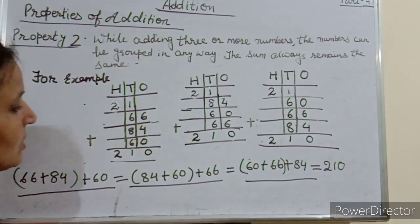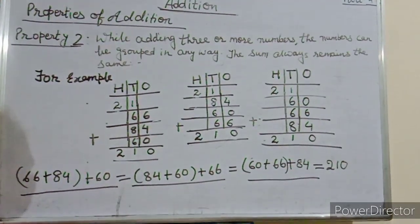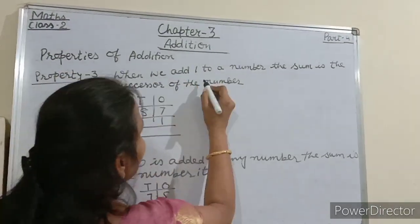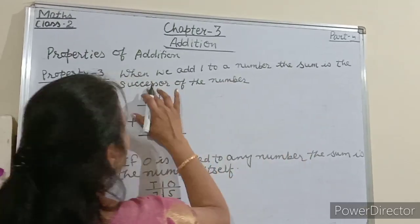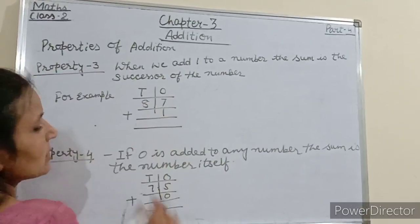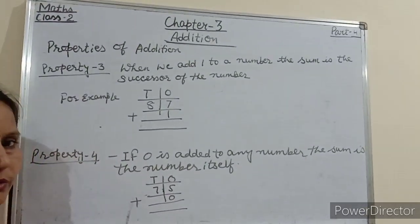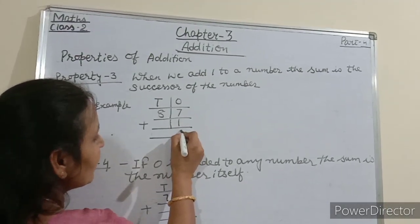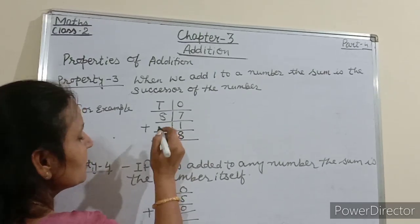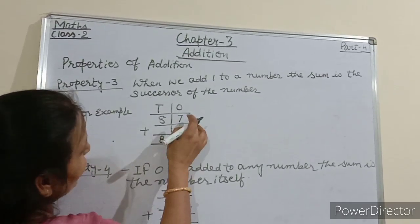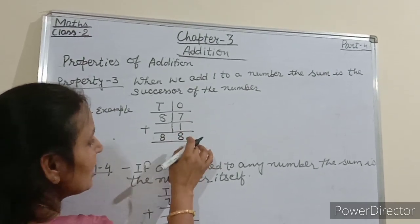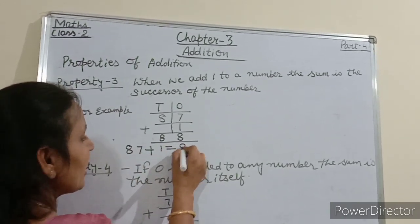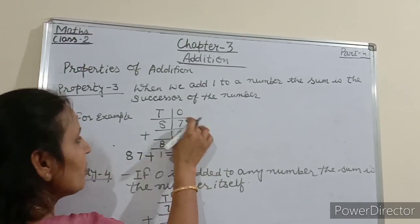Now start property number 3. When we add 1 to a number, the sum is the successor of that number. What is the successor of 87? In successor we add 1. So 7 plus 1 is 8, write 8. The successor of 87 is 88. So 87 plus 1 equals 88, and 88 is the successor of 87.